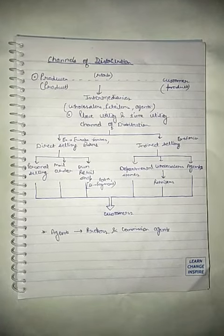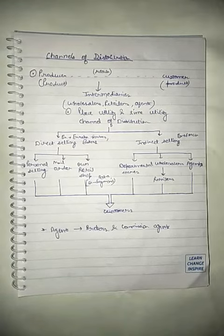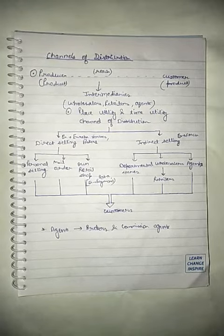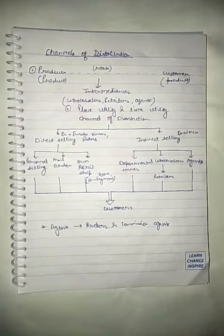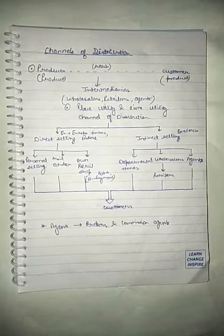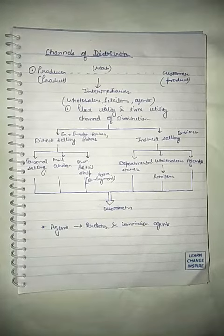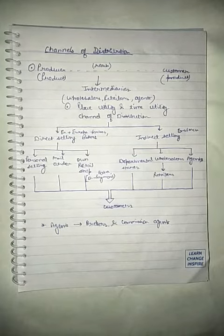goods from the producer to the consumer. As you can see in the diagram, the product is reaching from the producer to the customer with the help of various intermediaries. These intermediaries are like wholesalers, retailers, and agents. In short, the channel of distribution refers to various intermediaries who help in moving the product from the producer to the consumer.